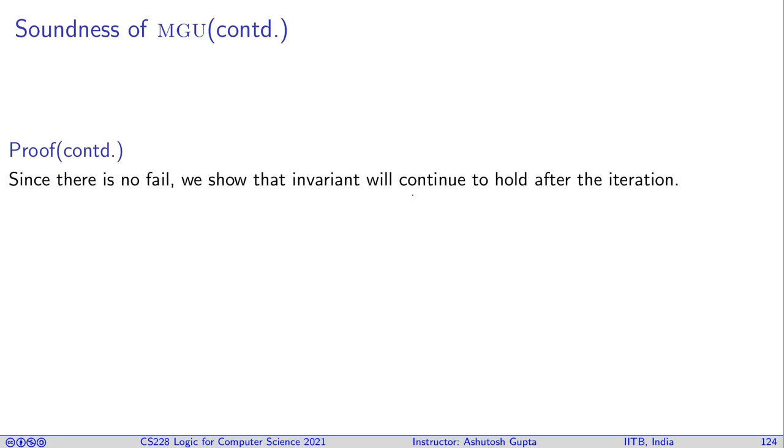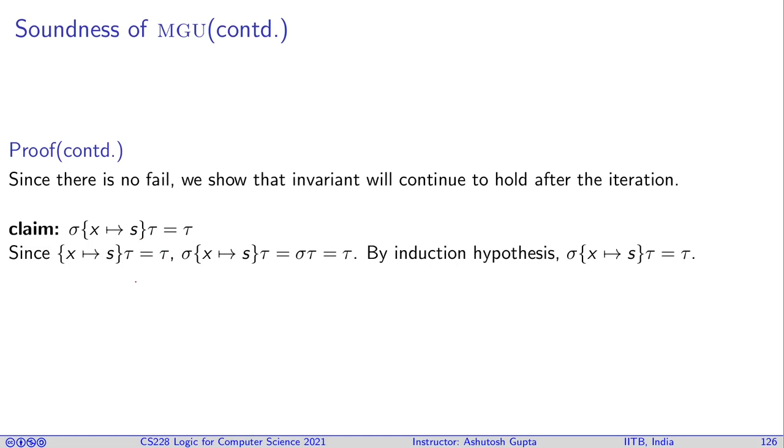Now, since there is no fail, we show that the invariant will continue to hold after that. All the ingredients are in place, we just need to apply them now. For example, I need to show that after modifying my substitution, I still remain to satisfy our invariant. Well, what have we done? We have shown this guy is equal to tau. So what I will do is replace this by tau, I get sigma tau. And since sigma tau equals tau because of my induction hypothesis, I get this equality.